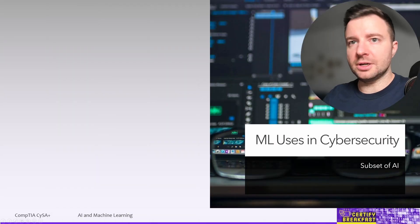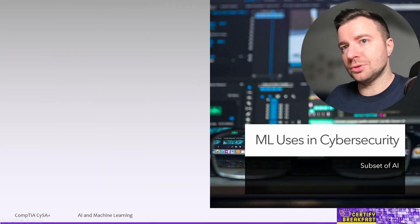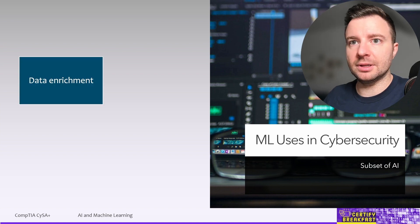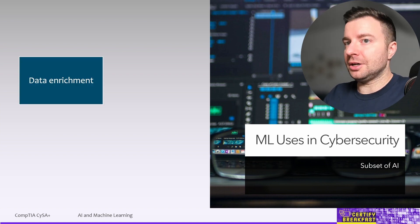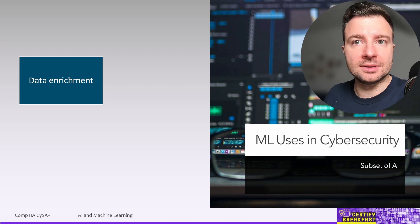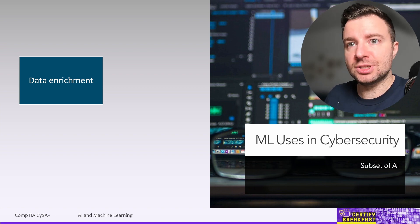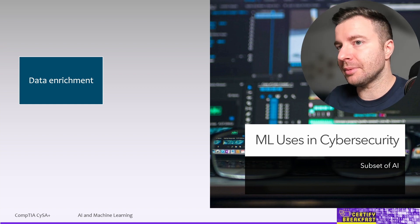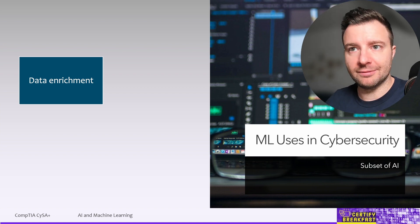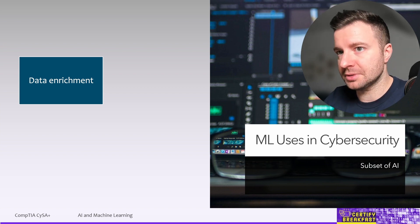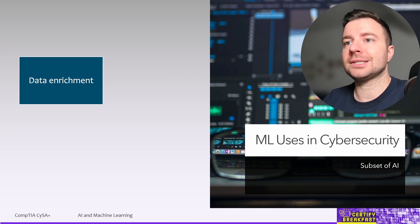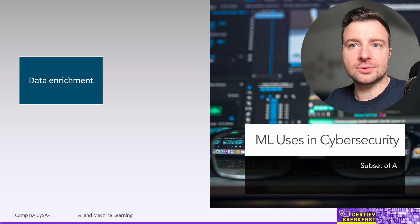Machine learning has many uses in cybersecurity. For example, in data enrichment, a simple alert that hasn't yet been marked as a security incident can be enriched with data from a machine learning system that is able to correlate events happening at the same time on different systems — such as user activity, active connections, and so on. Advanced SIEM products already do this.